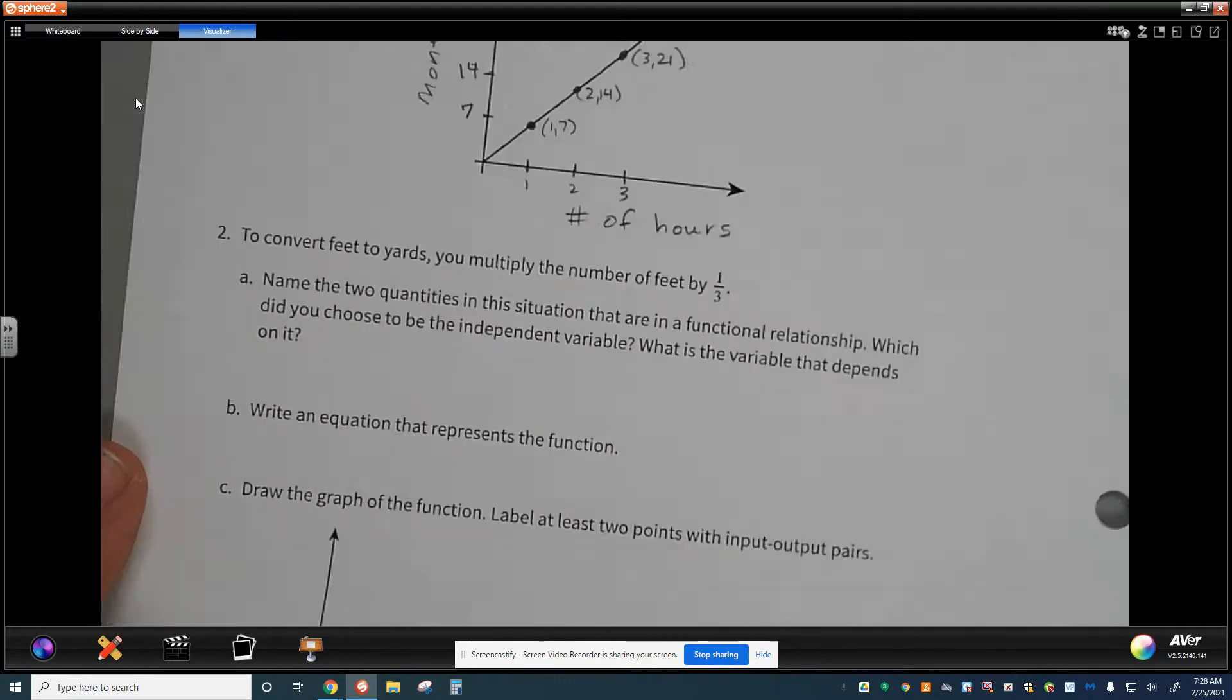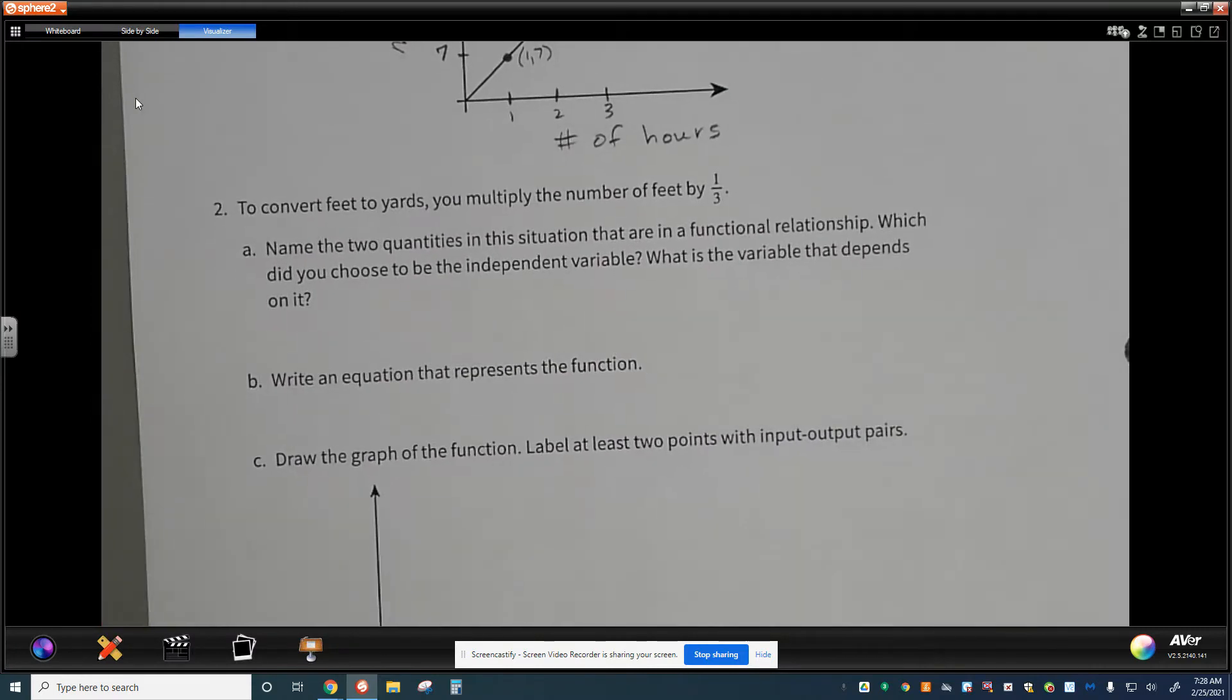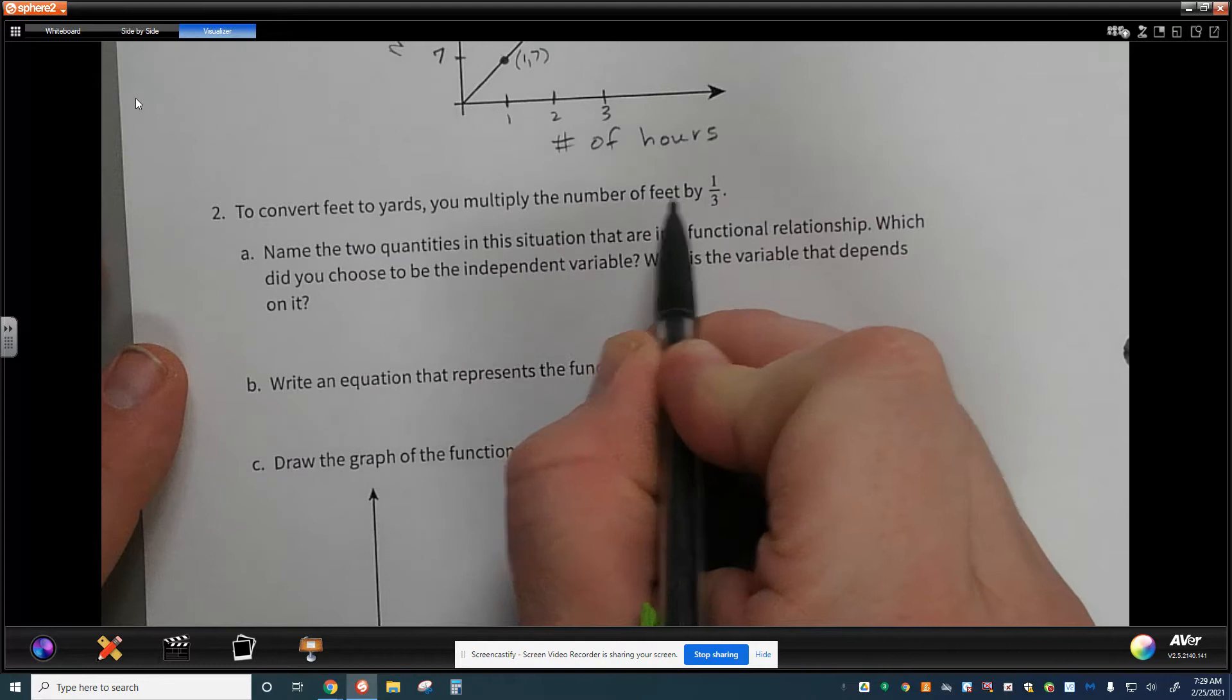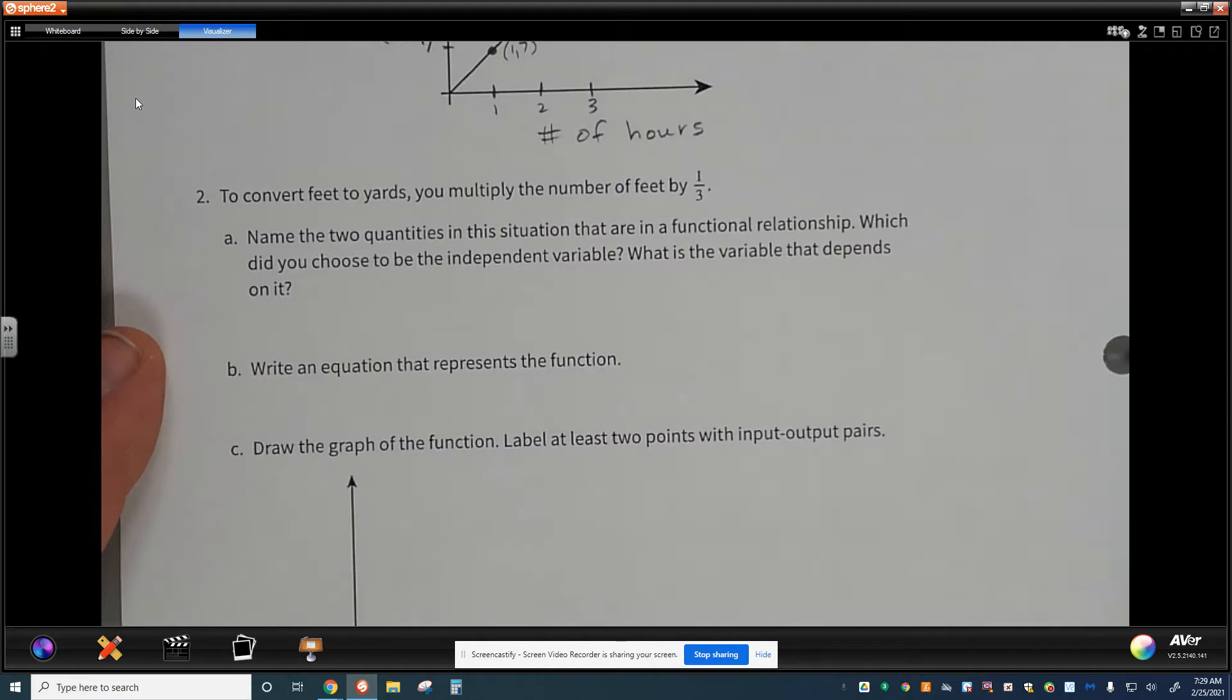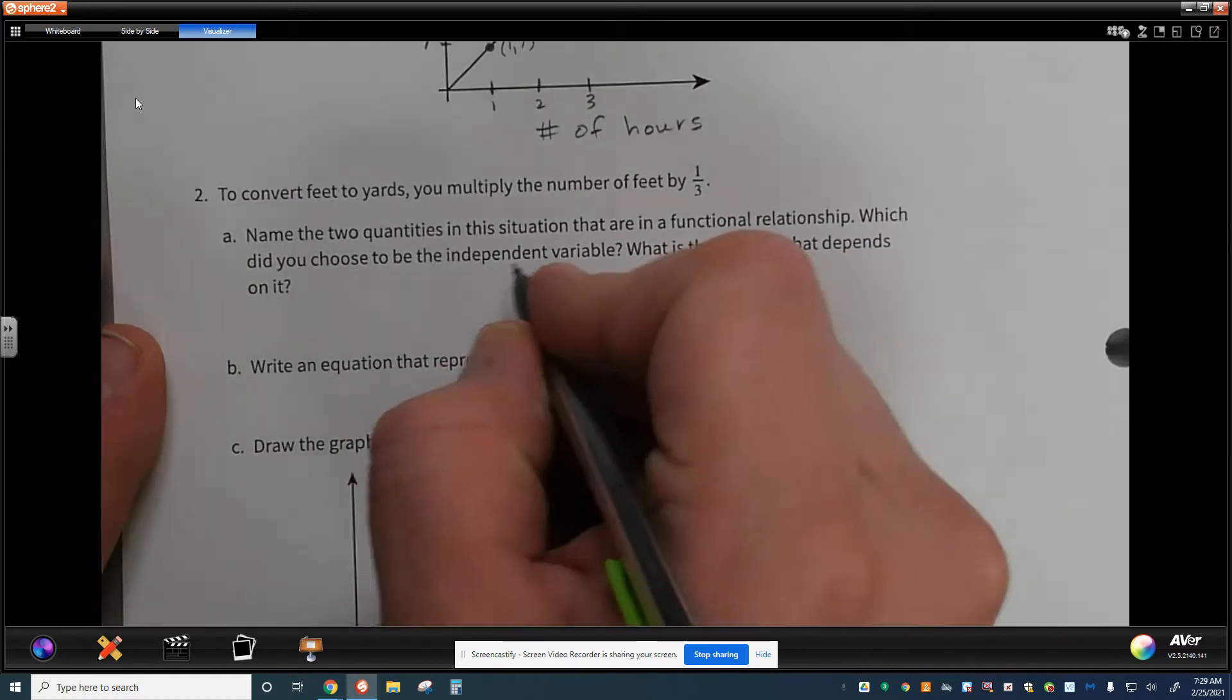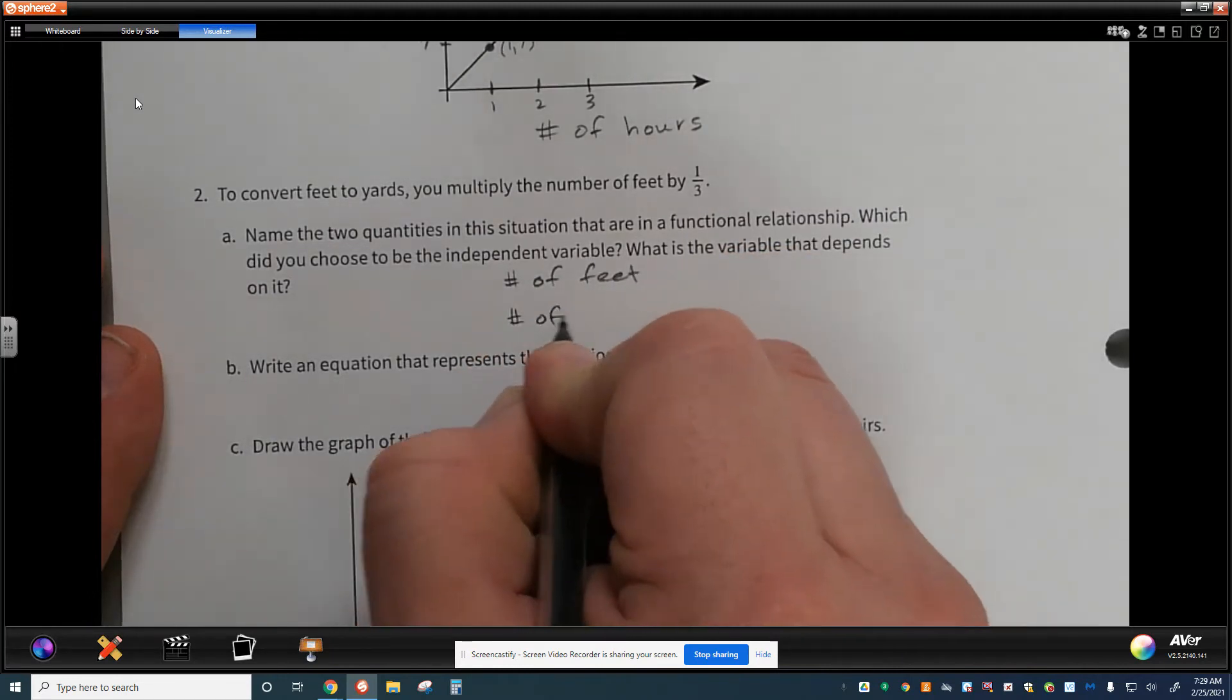The next situation is to convert feet to yards, you multiply the number of feet by one-third. Well, if we're talking about the number of yards to feet, what it looks like here is if I'm multiplying my number of feet by one-third, that would indicate to me that that's the multiplication would be happening right here and would indicate to me that feet are the independent variable.